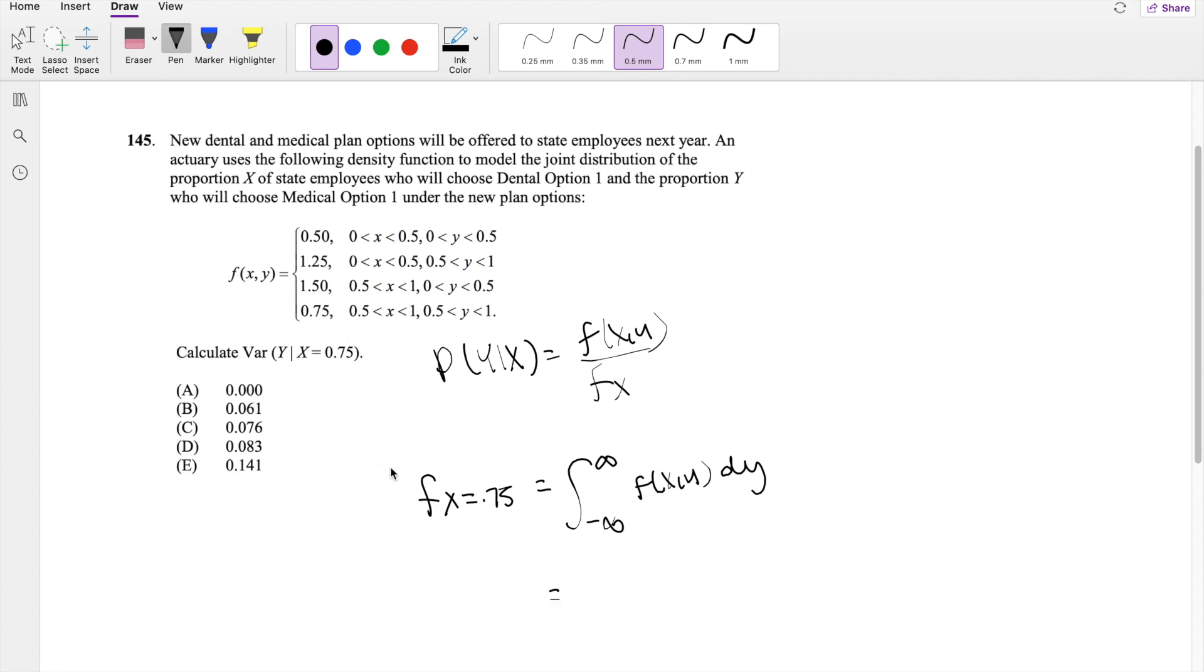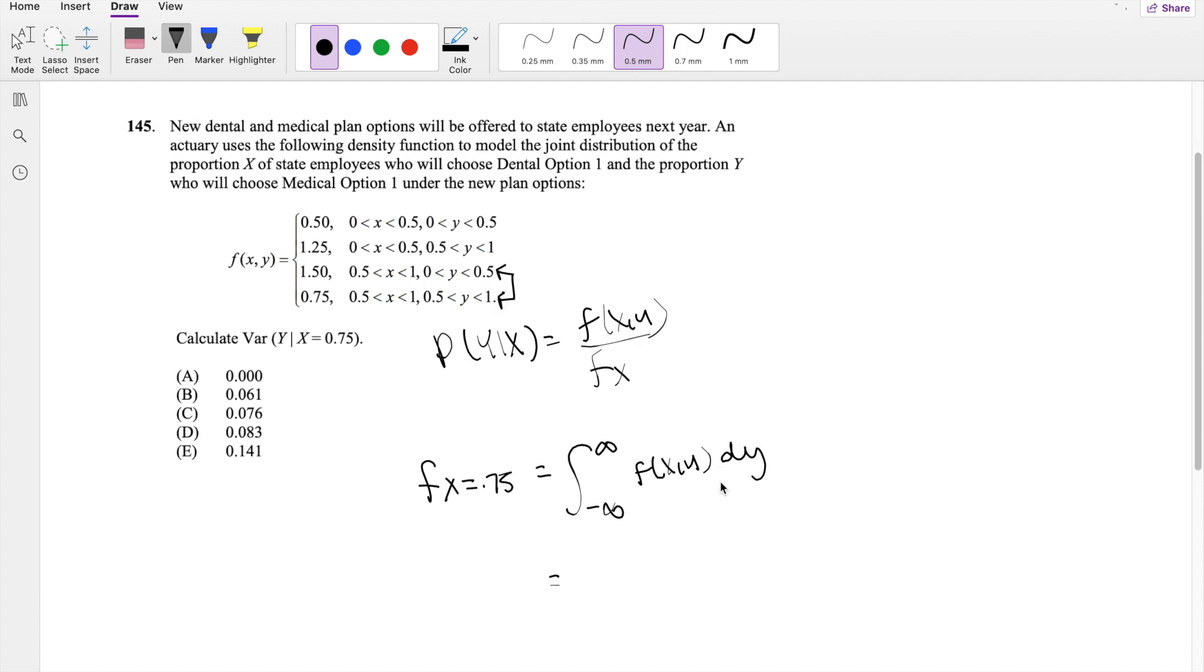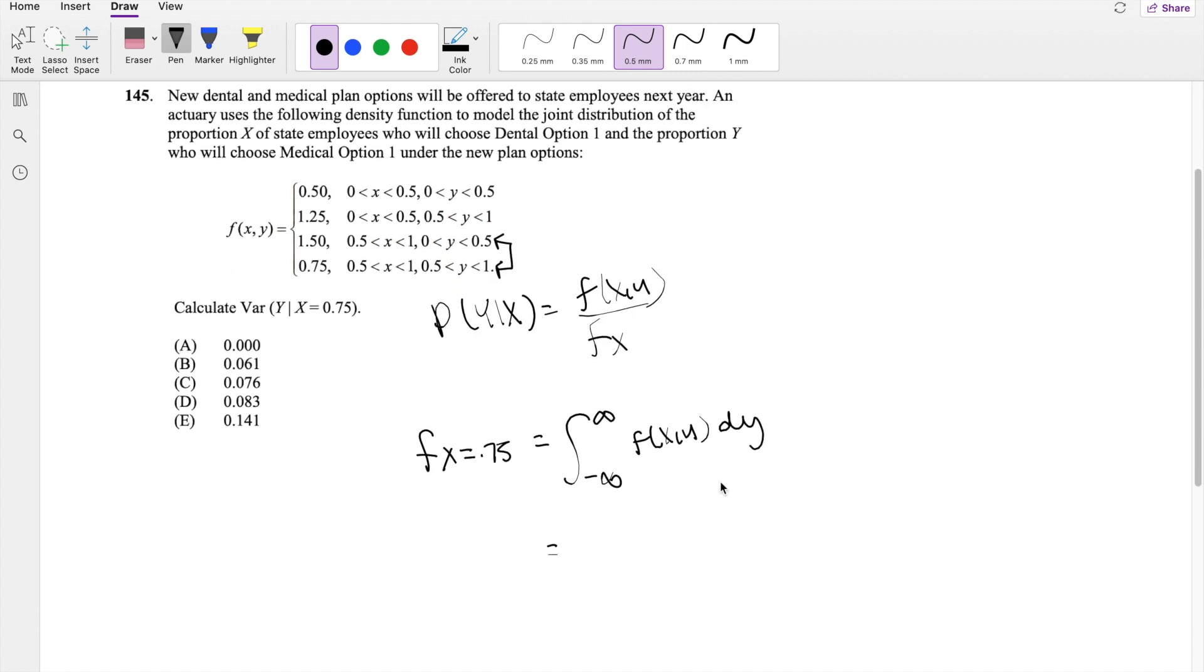So when x is equal to 0.75, there's actually two spots when that happens, right? These two here. So we actually have to integrate this, we have to separate it into two integrals. So one from going from 0 to 0.5, and one going from 0.5 to 1. So going from 0 to 0.5, the distribution function is going to be 1.5 dy, and this one right here is going to be 0.75 dy as well.